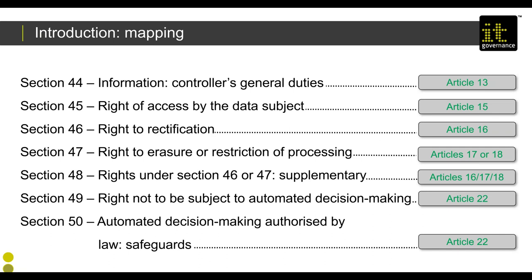Section 49 and Section 50 cover the right not to be subject to automated decision-making. Law enforcement is becoming more tech-savvy — police are using artificial intelligence to help solve crime, but there are rules under Part 3 governing those systems. There is an ongoing court case involving South Wales regarding the use of facial recognition systems on the general public — not just border controls but people in the high street. Such use of technology by police and other law enforcement agencies comes under Part 3 processing, with required safeguards covered by Sections 49 and 50.